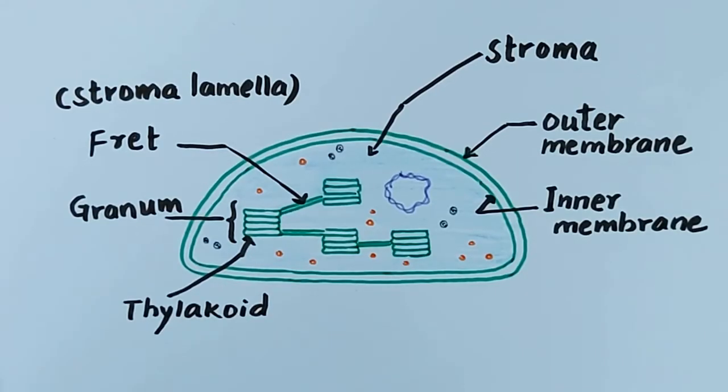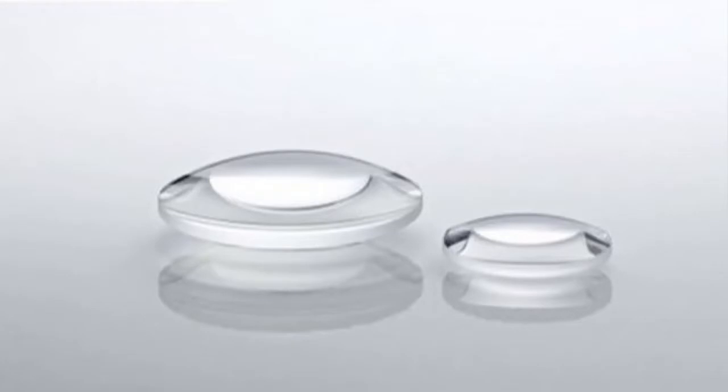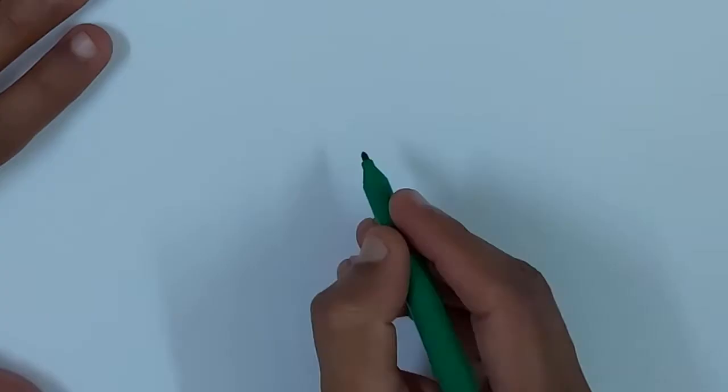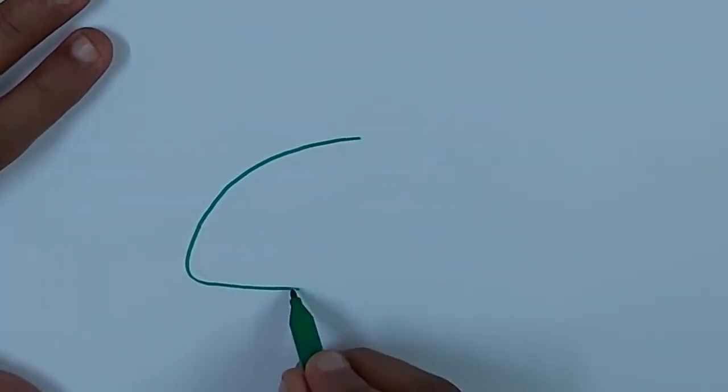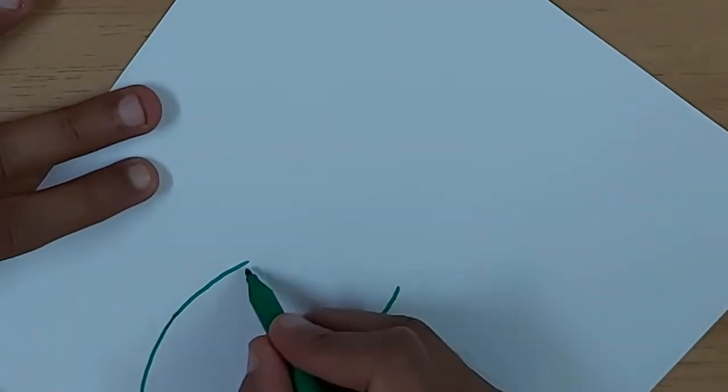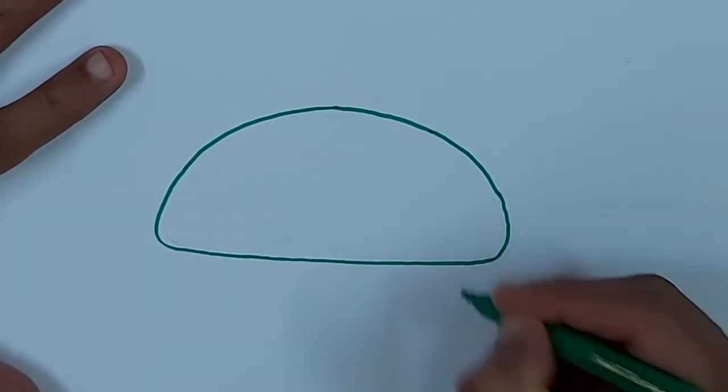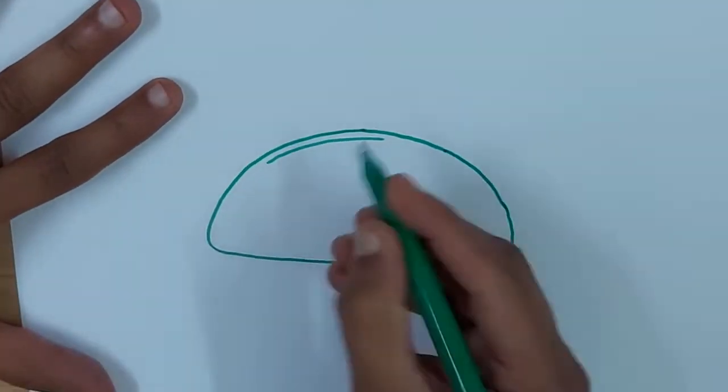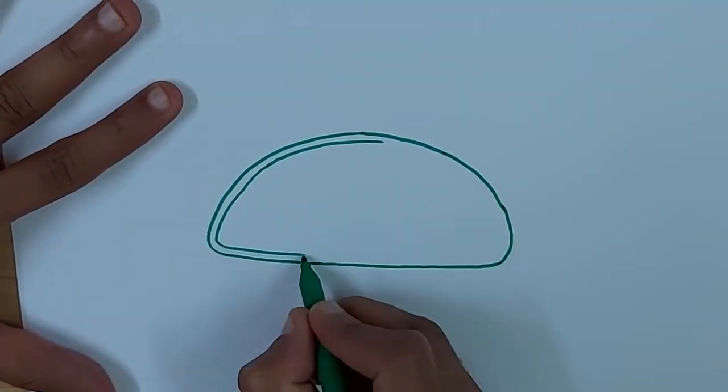We start with drawing the double membrane of the chloroplast. The shape will resemble that of a lens. Draw an oval-shaped outer membrane. Now draw an inner membrane running parallel to the outer membrane.